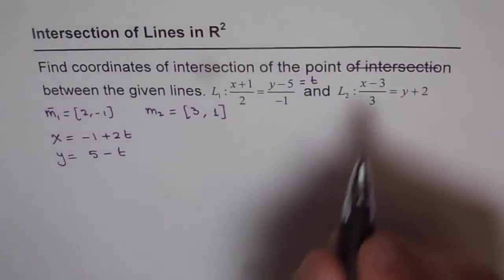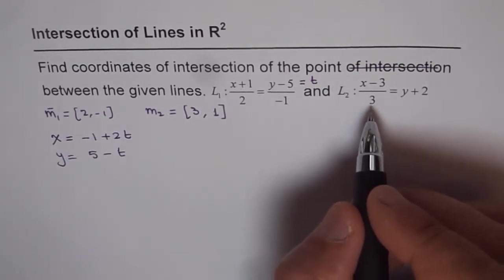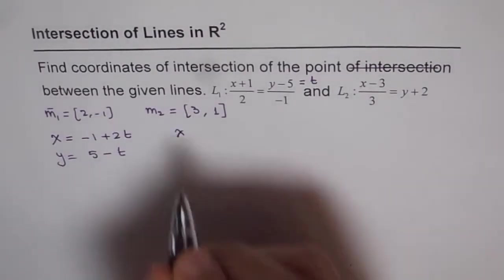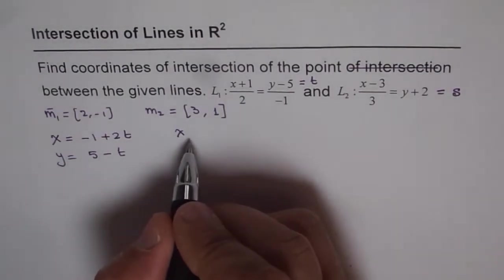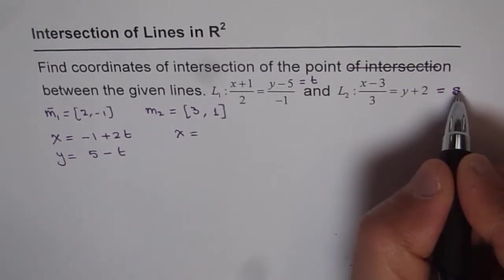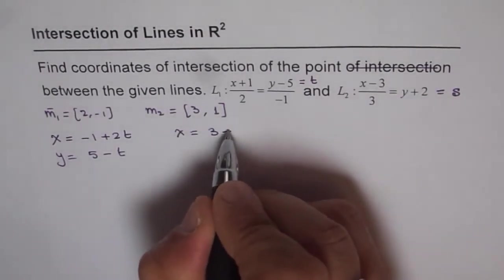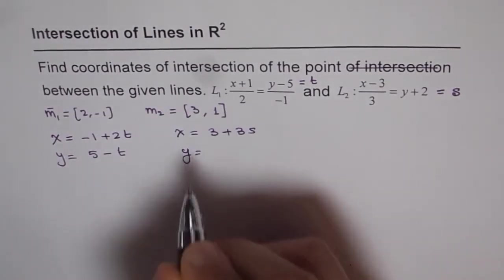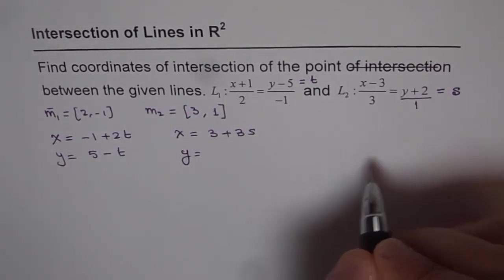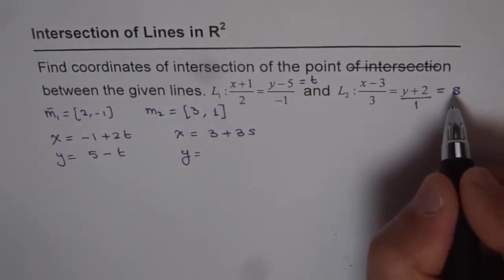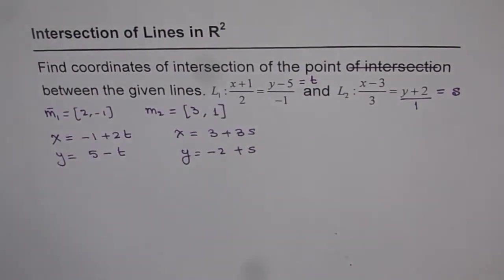For the second line L2, we write the equation in parametric form using parameter s. So x equals 3 times s, taking 3 to this side gives x = 3 + 3s. The y value: we have 1 here, so 1 times s is s, and minus 2, giving y = -2 + s.